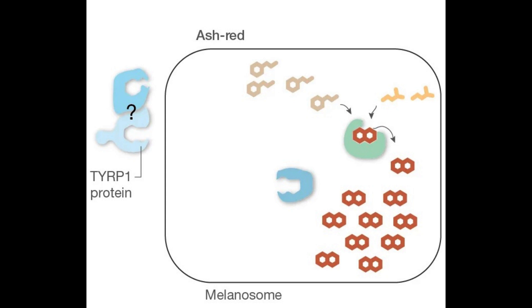In other animals, melanins also color hair, fur, skin, scales, and more. Variations in the TYRP1 gene affect fur and feather colors in dogs, cats, cattle, sheep, and quail.